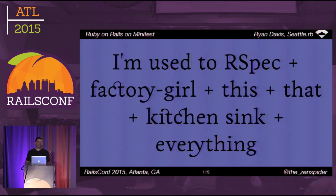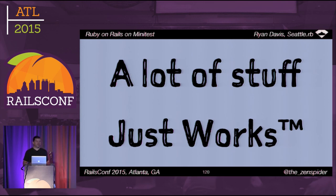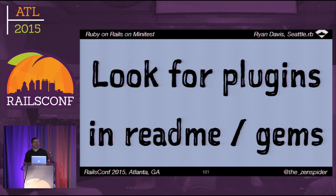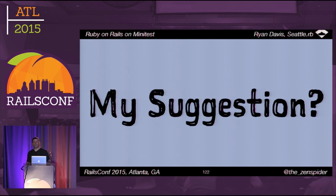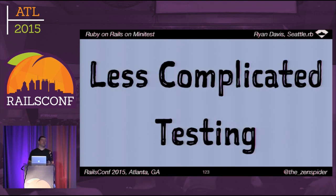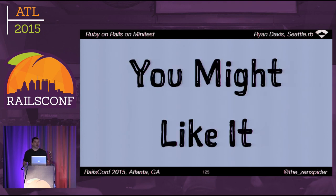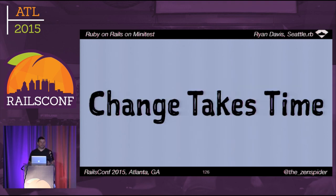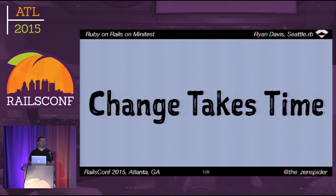Or maybe you're just used to kitchen sink development. For starters, just try it — it might work. Things like Mocha and a lot of testing libraries already work in Minitest just fine. Otherwise, someone probably beat you to it — look for existing plugins listed in Minitest's README, or search on RubyGems.org or Stack Overflow. My suggestion: try less complicated testing, only bring in plugins once you've decided you really need them. Change takes time — you might want to measure before and after. I've heard people have halved their test times by switching from RSpec to Minitest, but I don't have anything objective.